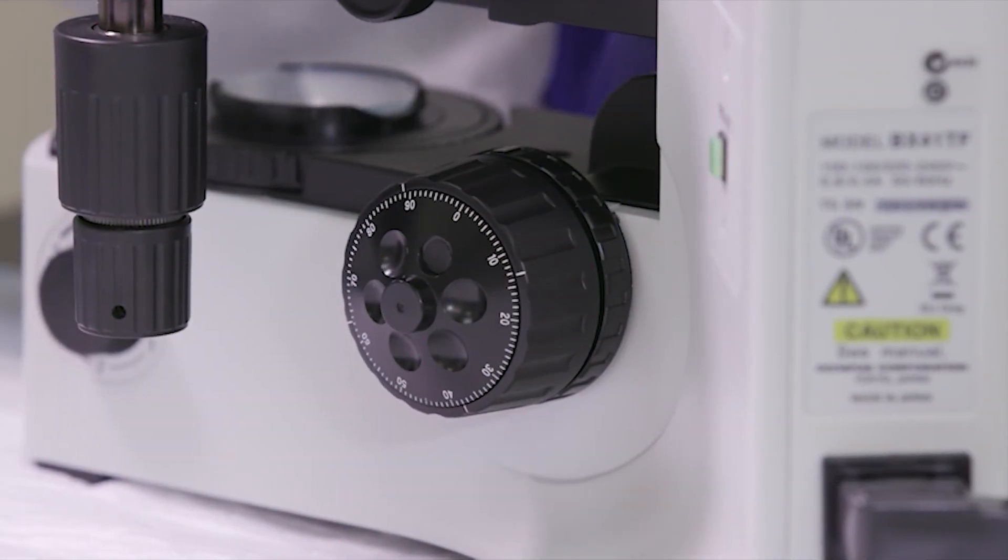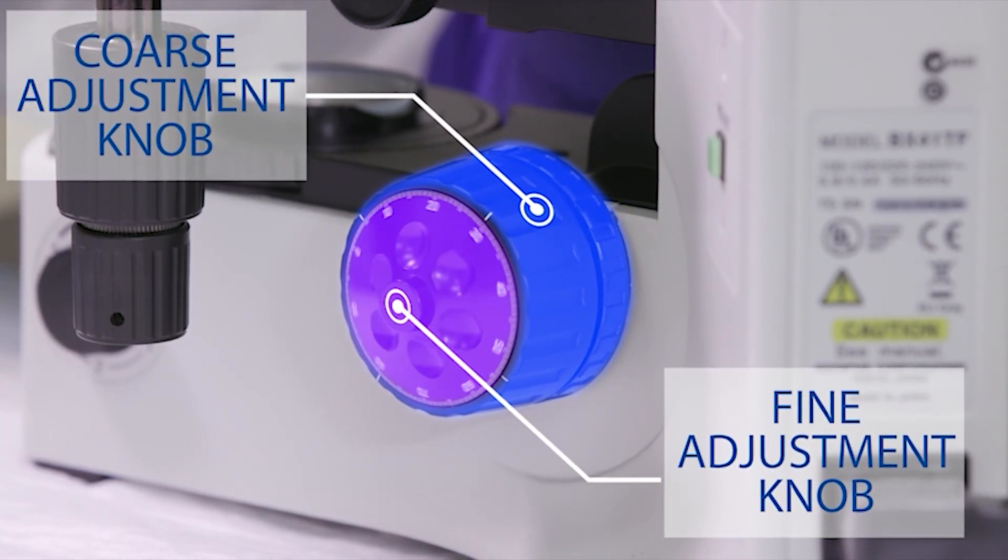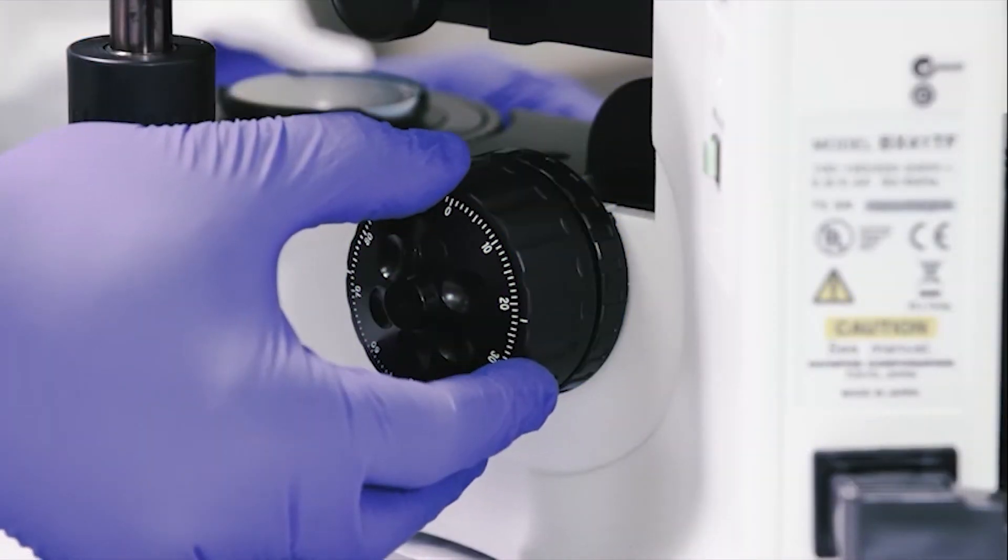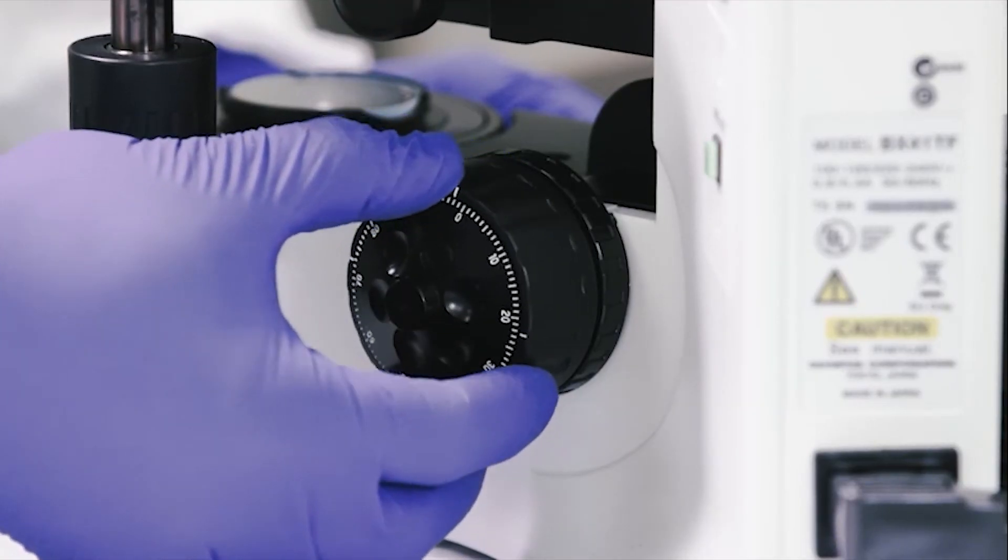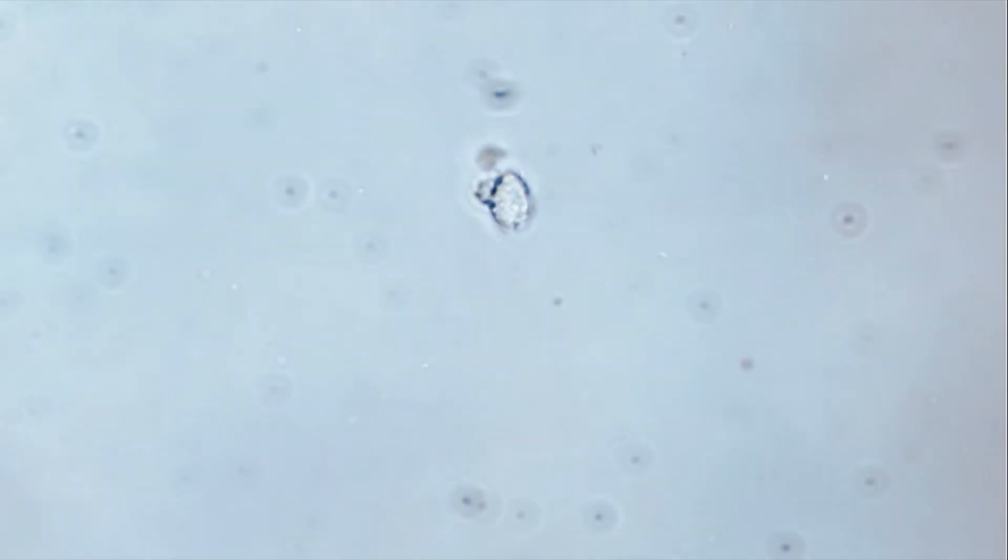There are two types of adjustment knobs on the microscope: coarse adjustment and fine adjustment. Both knobs are used to review a slide containing a specimen. The coarse adjustment knob, which is usually on the side of the microscope arm, is utilized to move the stage up and down to bring the specimen into focus.